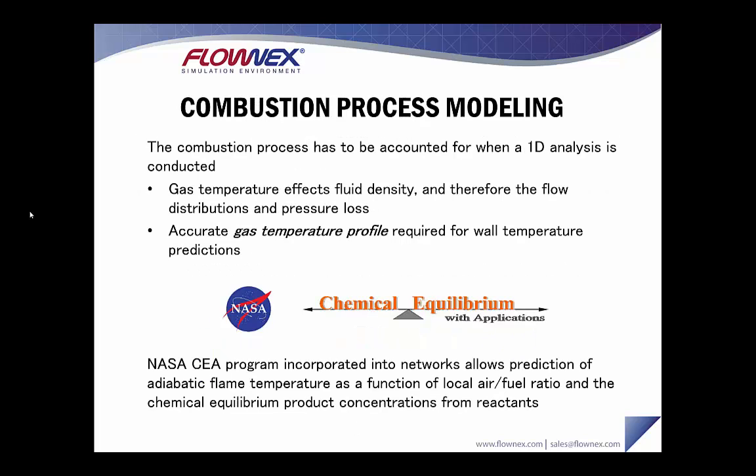The combustion process is also very important to take into account. Gas temperatures affect fluid density and therefore the flow distribution and pressure loss through your network. An accurate gas temperature profile is required to calculate wall temperatures. Within Flownex there is a NASA CEA program that can be incorporated into networks and allows the prediction of an adiabatic flame temperature as a function of local air-fuel ratio, and it will also calculate the chemical equilibrium product concentrations from reactants.